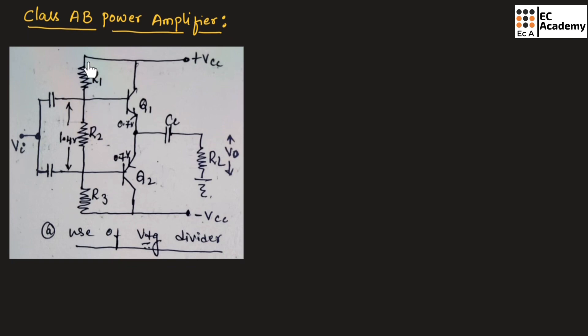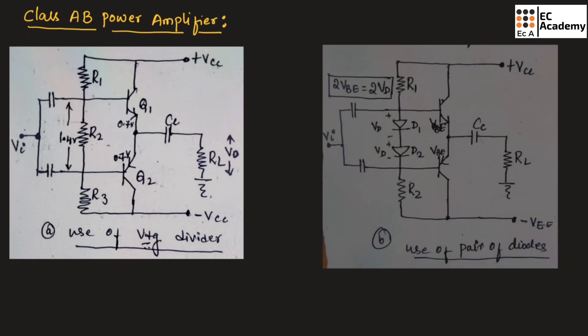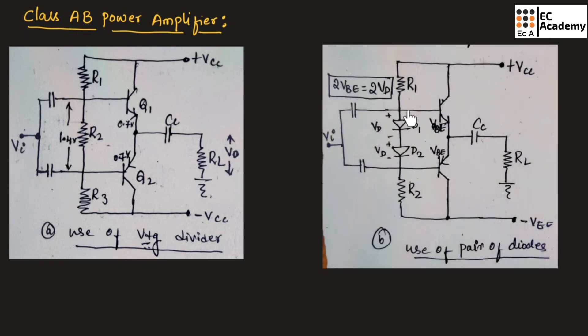This can be achieved by using voltage divider bias circuit as shown in this figure. Whenever there is a temperature change, this cut-in voltage, which is 1.4 volts, will change with respect to change in temperature. Hence, there might be a possibility of distortion at the output. To overcome this issue...